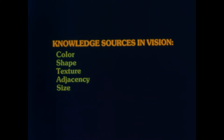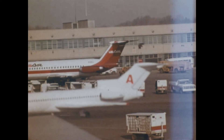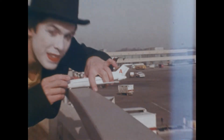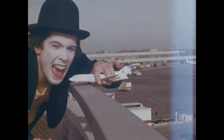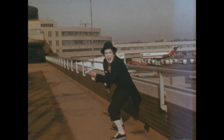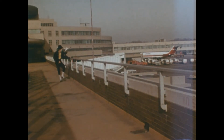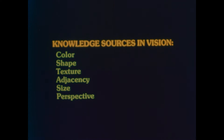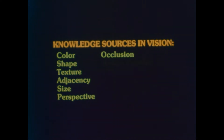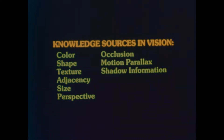Size is another feature we associate with objects. Many scenes would look ambiguous to us if we did not use our knowledge about depth to choose the most likely interpretation. We expect a jet to be larger than a person, but when objects are viewed from a distance, relative size or perspective plays an important role in our perception of depth. Other powerful cues we use to choose an interpretation of a scene are occlusion, motion parallax, and shadow information.